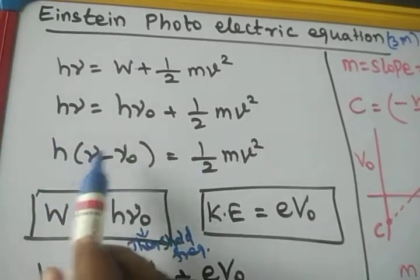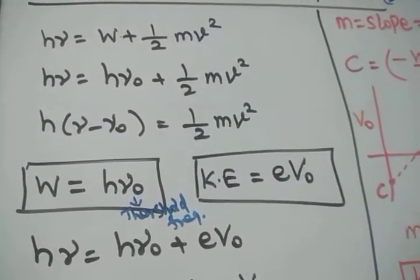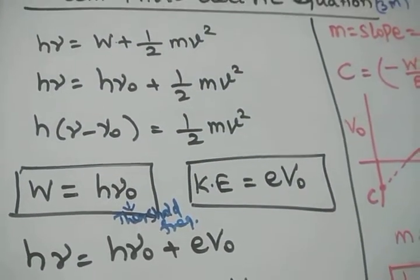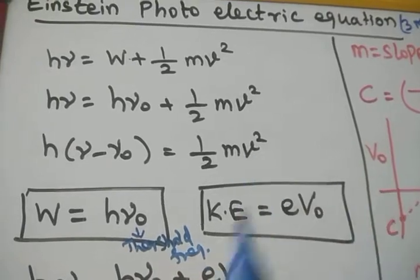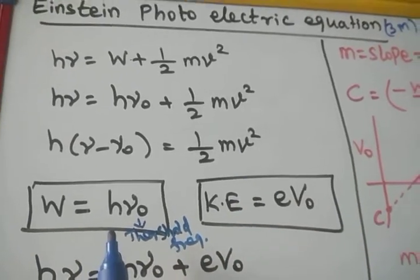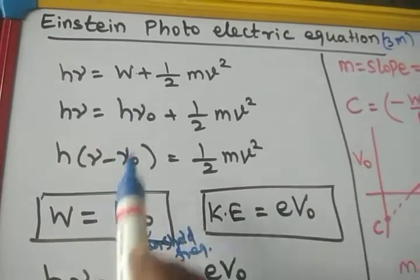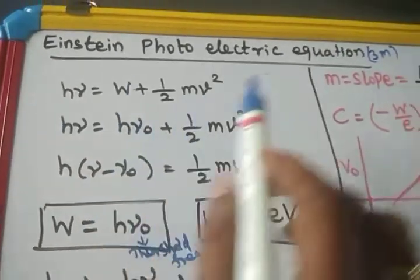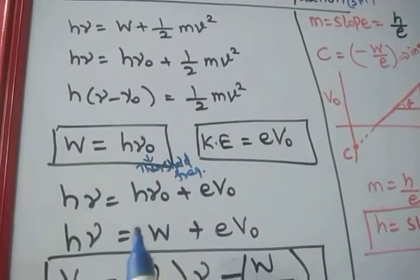Rearranging, we get H into (nu minus nu-naught) equals half mv squared, which is the kinetic energy of the electron. These are the Einstein photoelectric equations.